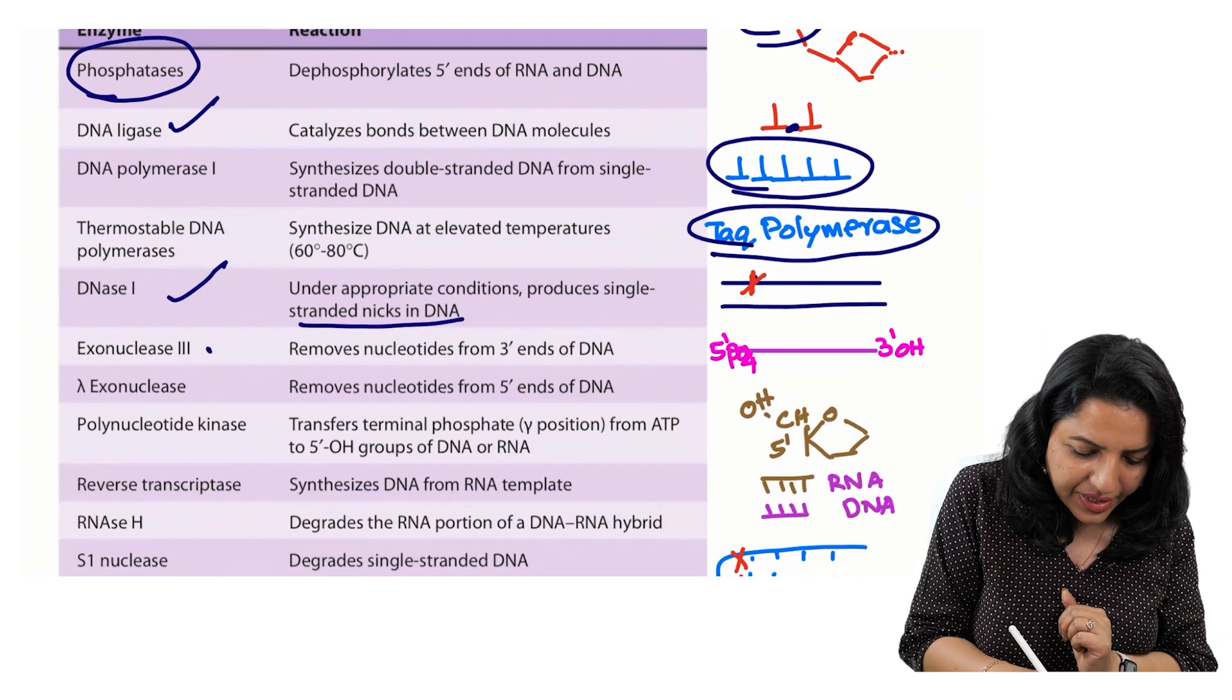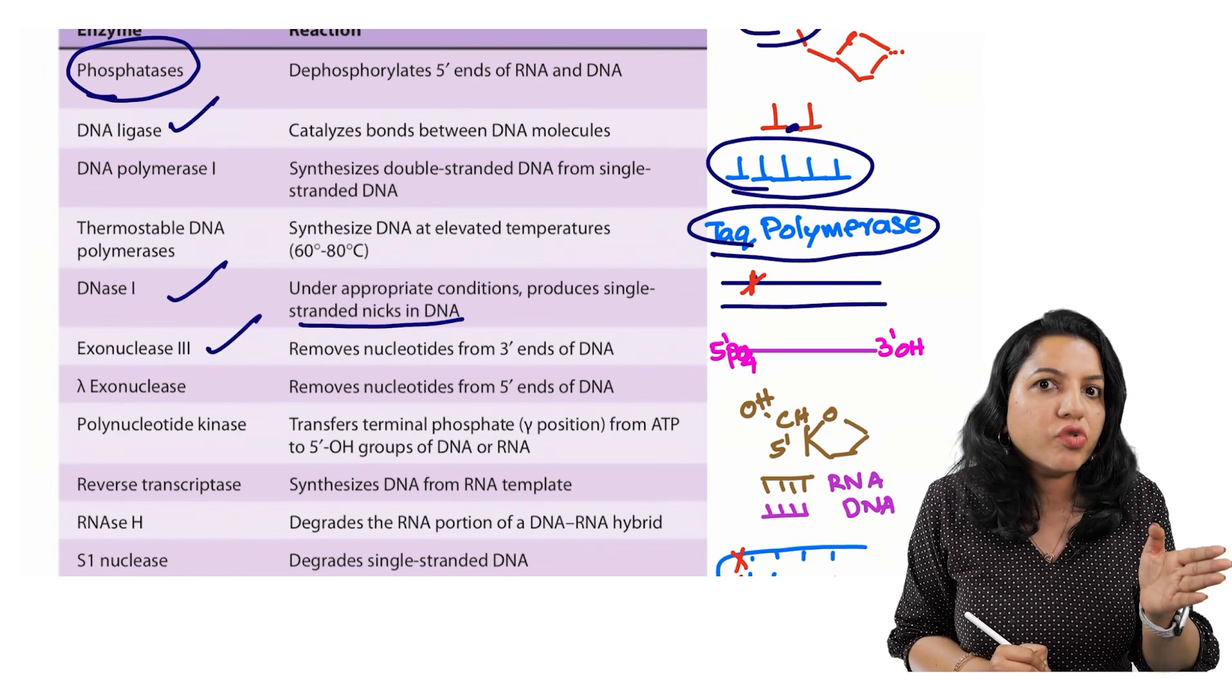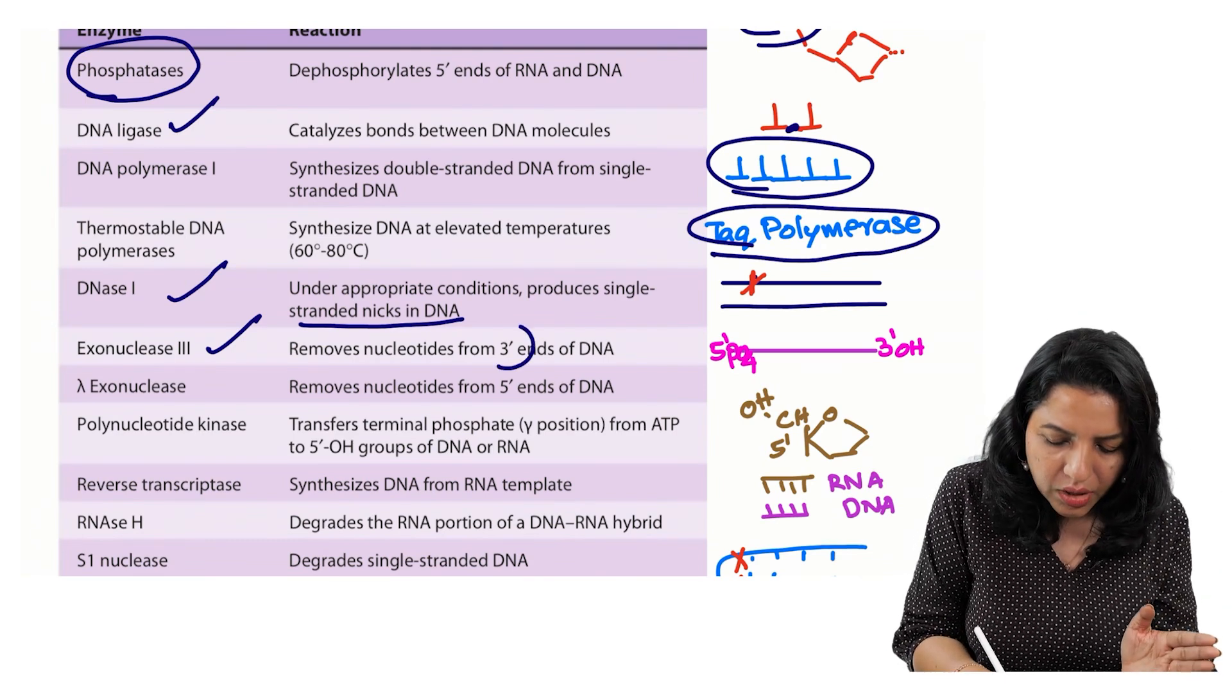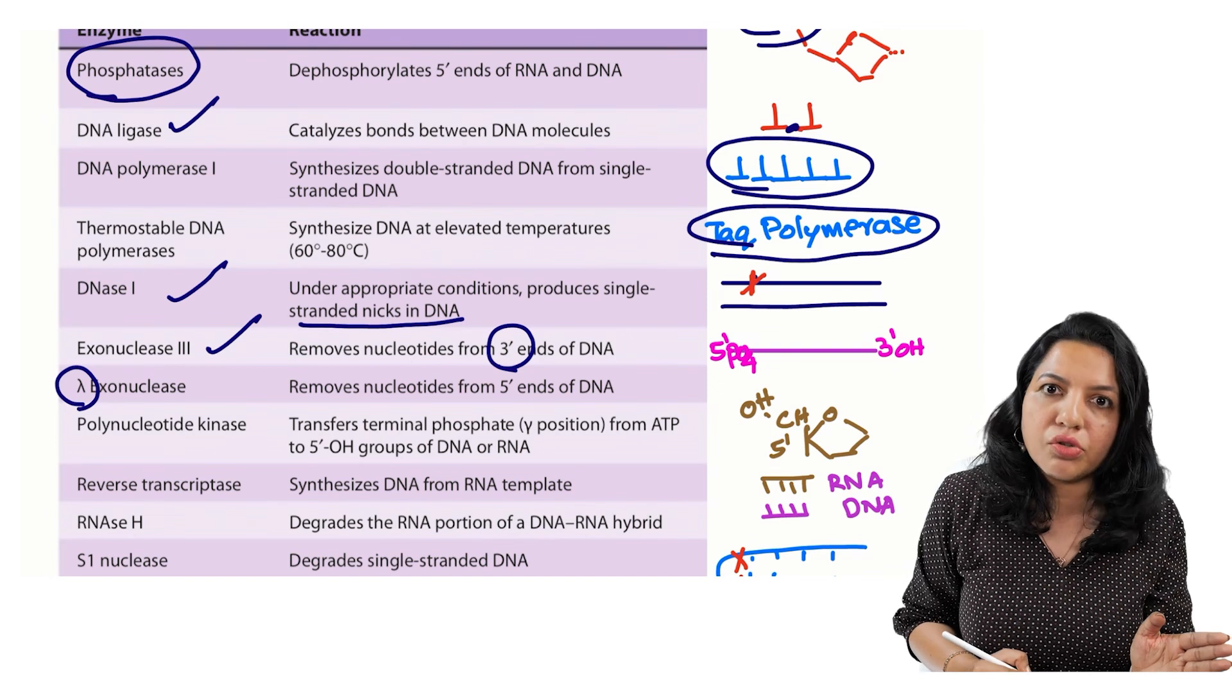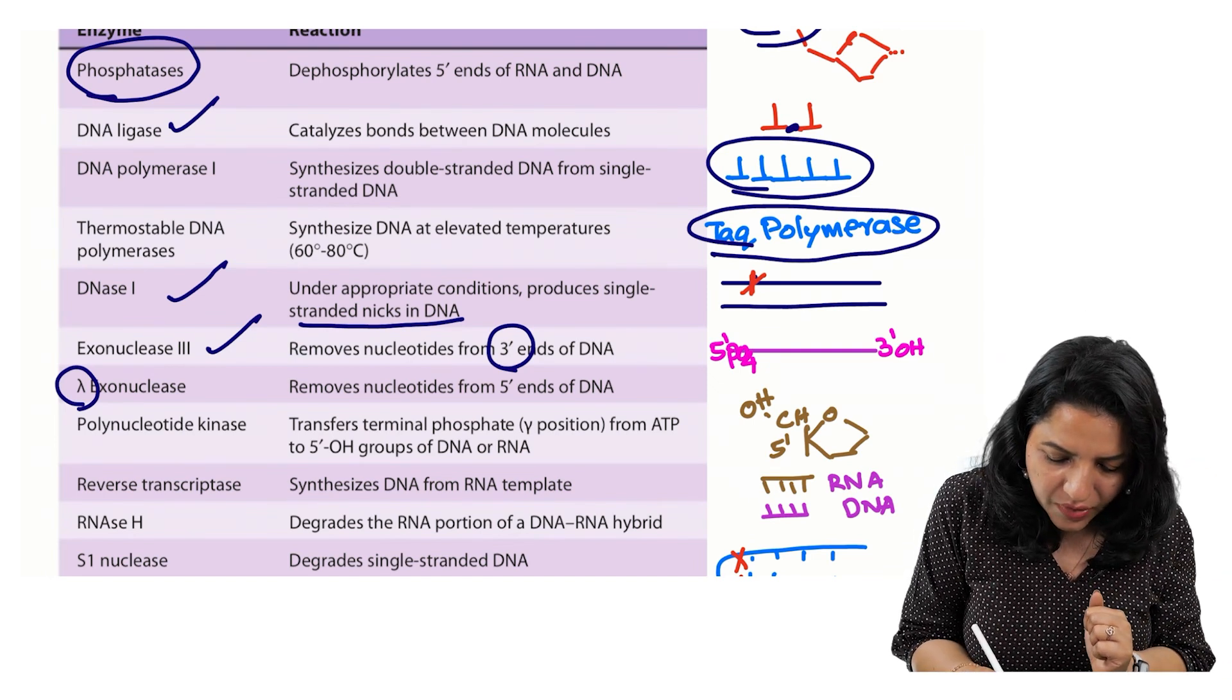Then the next one is exonuclease 3. Exonuclease 3, we know that they are the nucleases which removes the nucleotides from the ends. Exonuclease 3 means it is removing the nucleotides from the 3 prime end and there is a lambda exonuclease which means that it is removing the nucleotides from the 5 prime end.